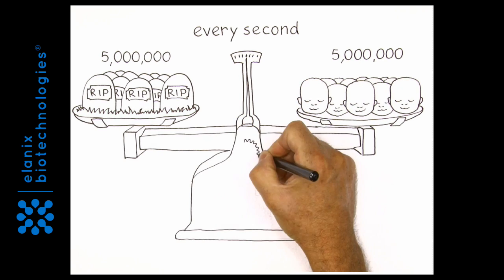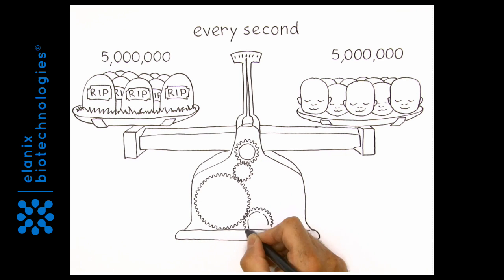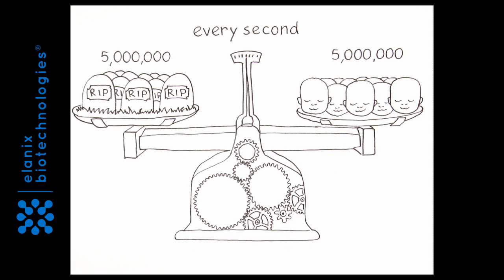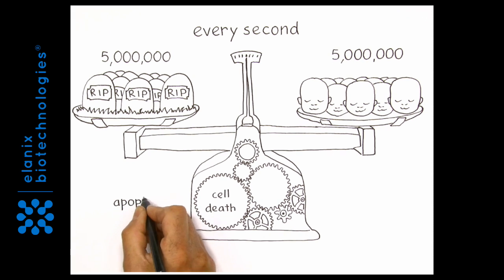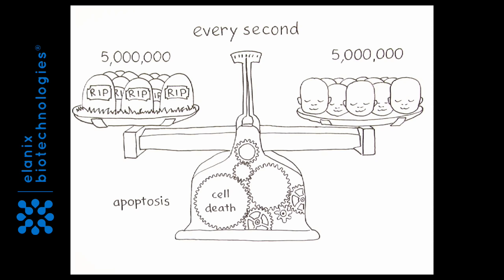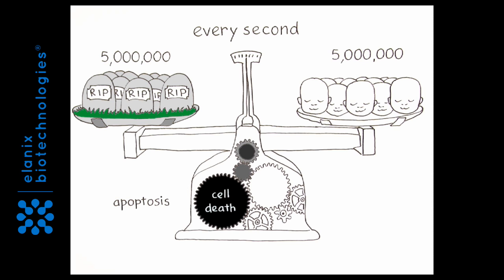Different mechanisms operate in our tissues to keep the cellular death-birth cycle in balance. Programmed cell death is called apoptosis. It relies on multiple overlapping mechanisms to ensure that old or diseased cells are killed to keep the organism healthy.